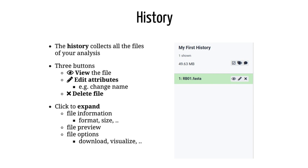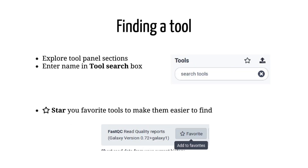You can also click on a dataset to expand it, which will show more information and more options. After your data is uploaded, you are ready to run tools. You can find tools by exploring the tool list on the left, or if you already know the name of the tool you can enter it in the search box at the top of the tool panel. You can add a tool to your favorites by clicking the star at the top of the tool.